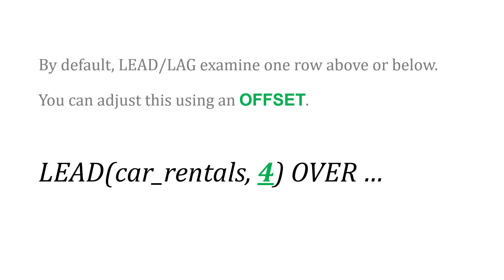As an additional note, by default lead and lag examine one row above or below. You can adjust this if you want by using an offset — just add it to the lead or lag statement. For example, you could say lead car rentals comma four to look at four rows away instead of just one.